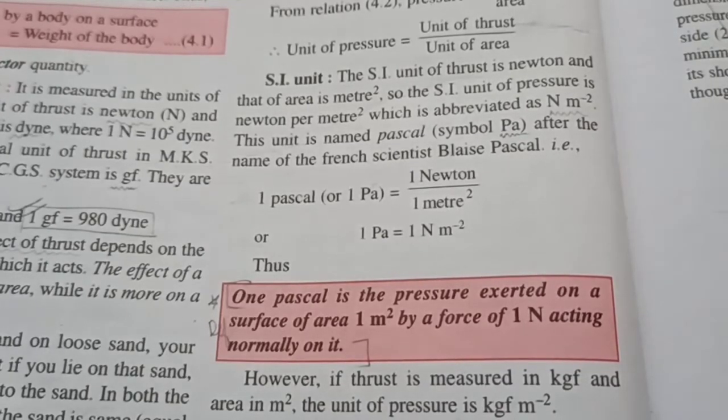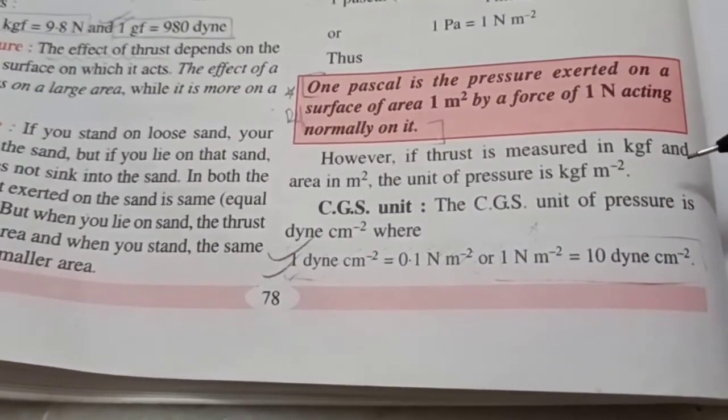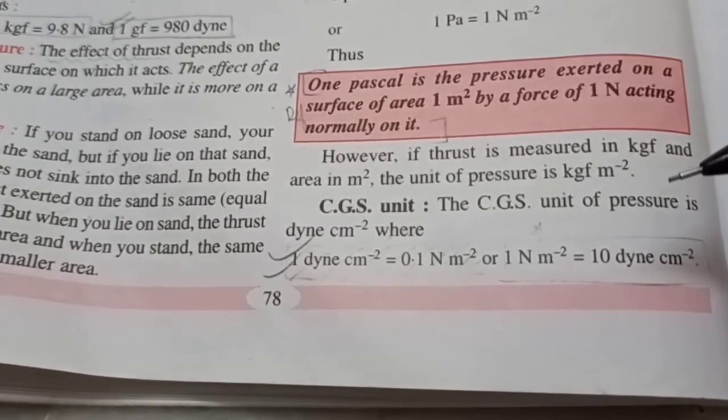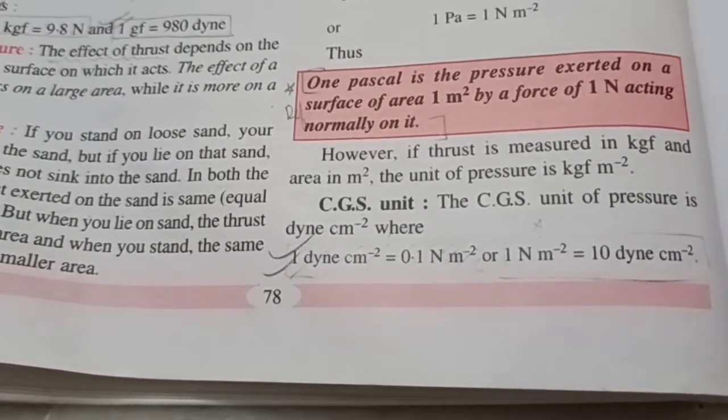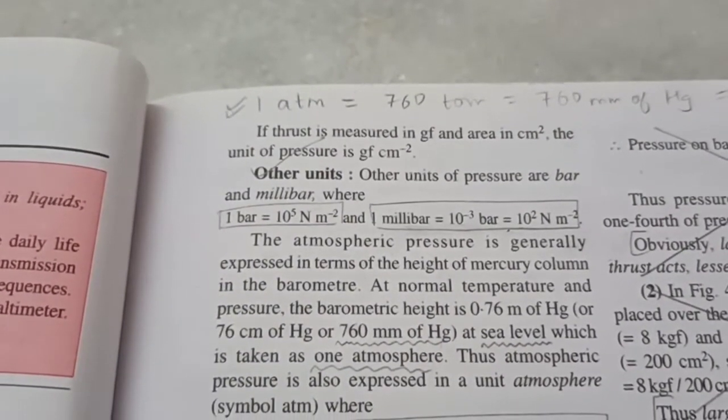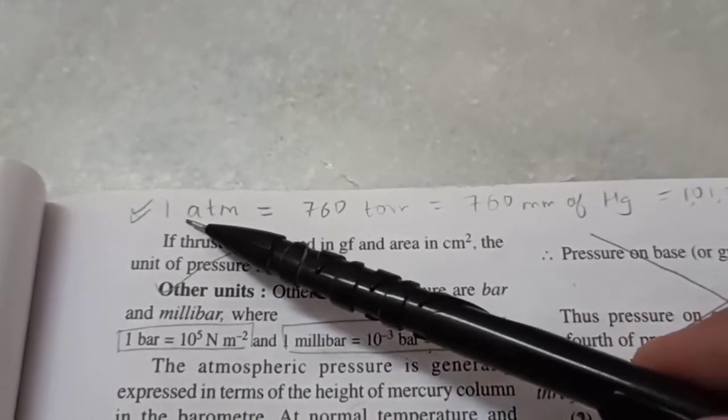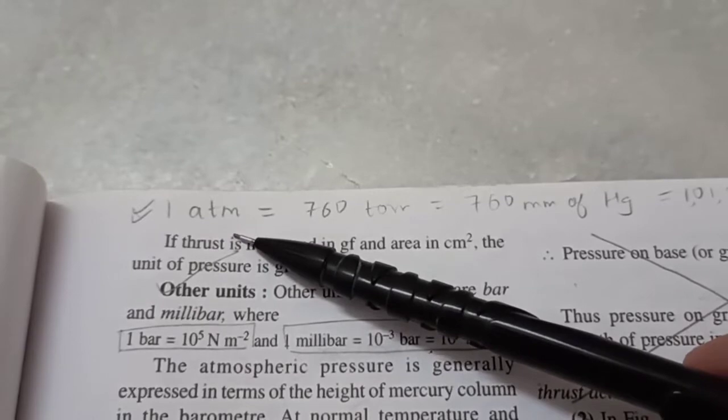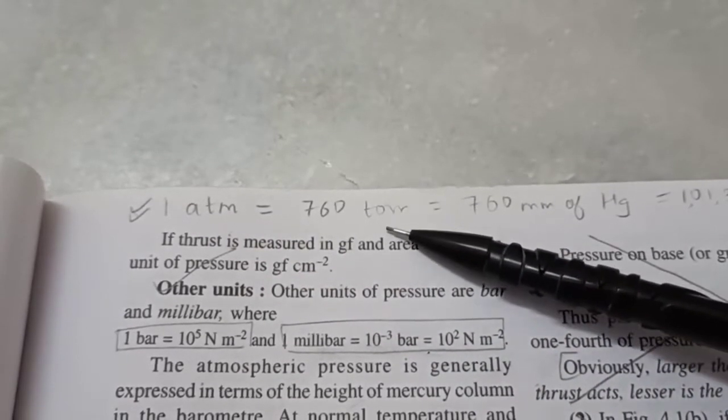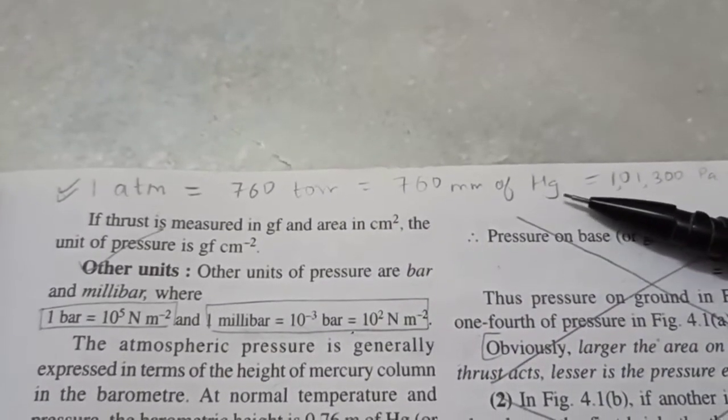There are other units, of course. For example, dyne per centimeter cube is a CGS unit. Conversion has to be remembered. We also have kgf per meter square. For atmospheric pressure, we have some other units as well. At sea level, the normal atmospheric pressure is 1 atm. Which is equal to 760 torr. That's another unit to measure air pressure. And that is equal to 760 mm of mercury.